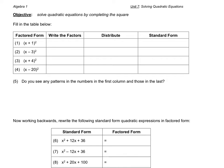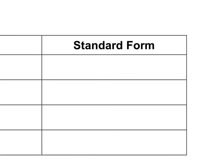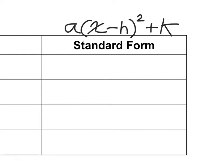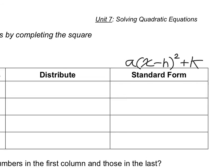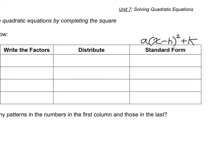The first little table here is asking us to basically expand out what we have. So x plus 1 squared, we want to get that into what's called the standard form. I'm going to indicate here what the final answer ought to look like. We should be looking at something in the form of a times x minus h squared plus k. That's ultimately what we're trying to get as a result.